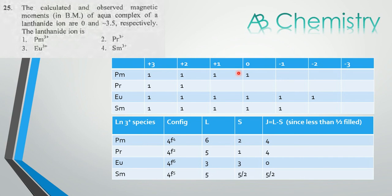Summing up all of these, that is 4/2 which is 2. L minus S, since these are all less than half-filled, we'll be taking the lower value of J, so L-S, that is 6-2 = 4. So for Promethium, J = 4.